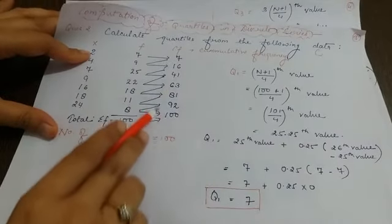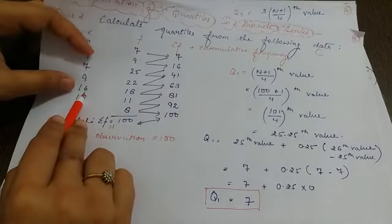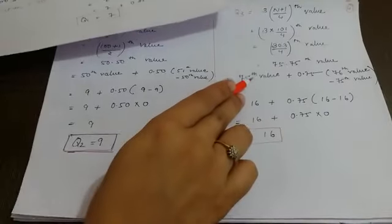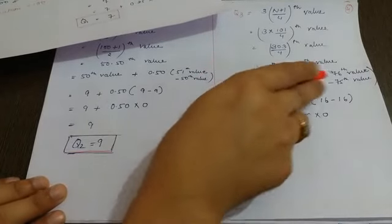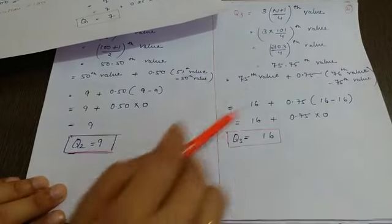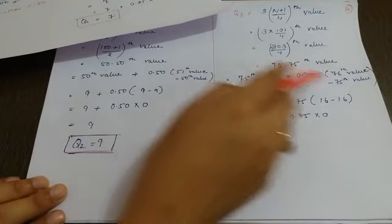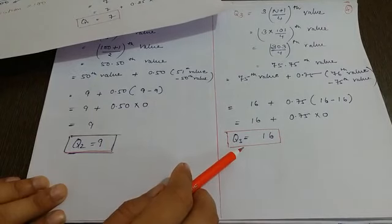Now in this case, you can see 75th and 76th, it will fall in this 81. So this 16 value that came, this 16 we will substitute here in place of 75. We substitute 16. In case of 76th, again 16. In case of 75th, again 16. So in this whole case, this whole value will become zero. Rest you have 16 remaining, and it will give third quartile.